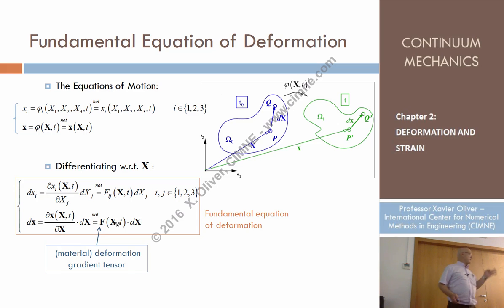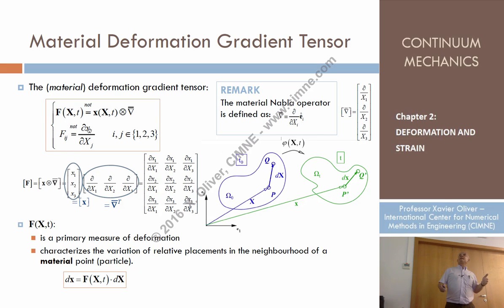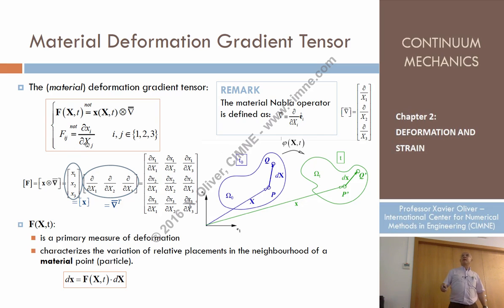This is called the deformation gradient tensor, denoted F. It is a second-order tensor because it has two indices. Its component Ij can be obtained from the equations of motion by differentiating every spatial coordinate component with respect to the corresponding material coordinates. Fij is the component ij of F, and it can be written in a specific compact form.